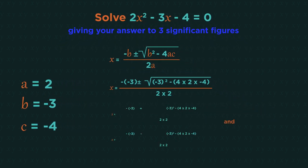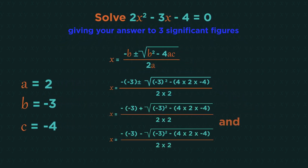We can either type that straight into our calculator. So minus minus 3 plus everything for one answer. And then to get the second answer, type in minus minus 3 minus everything.